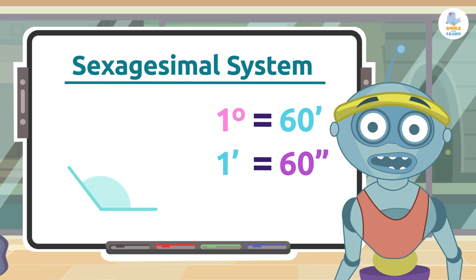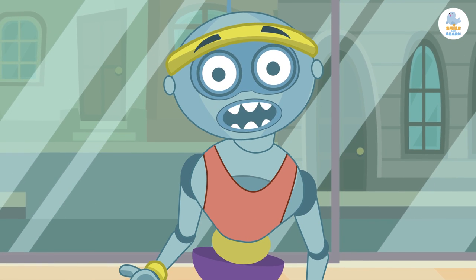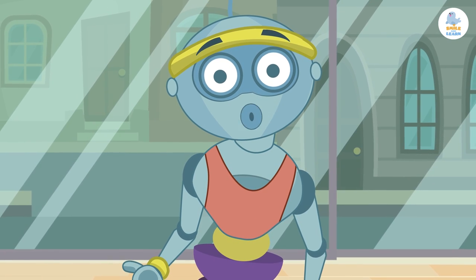Also remember that one degree equals 60 minutes and one minute equals 60 seconds. Today we'll learn how to subtract angles with some examples. You will see how easy it is.